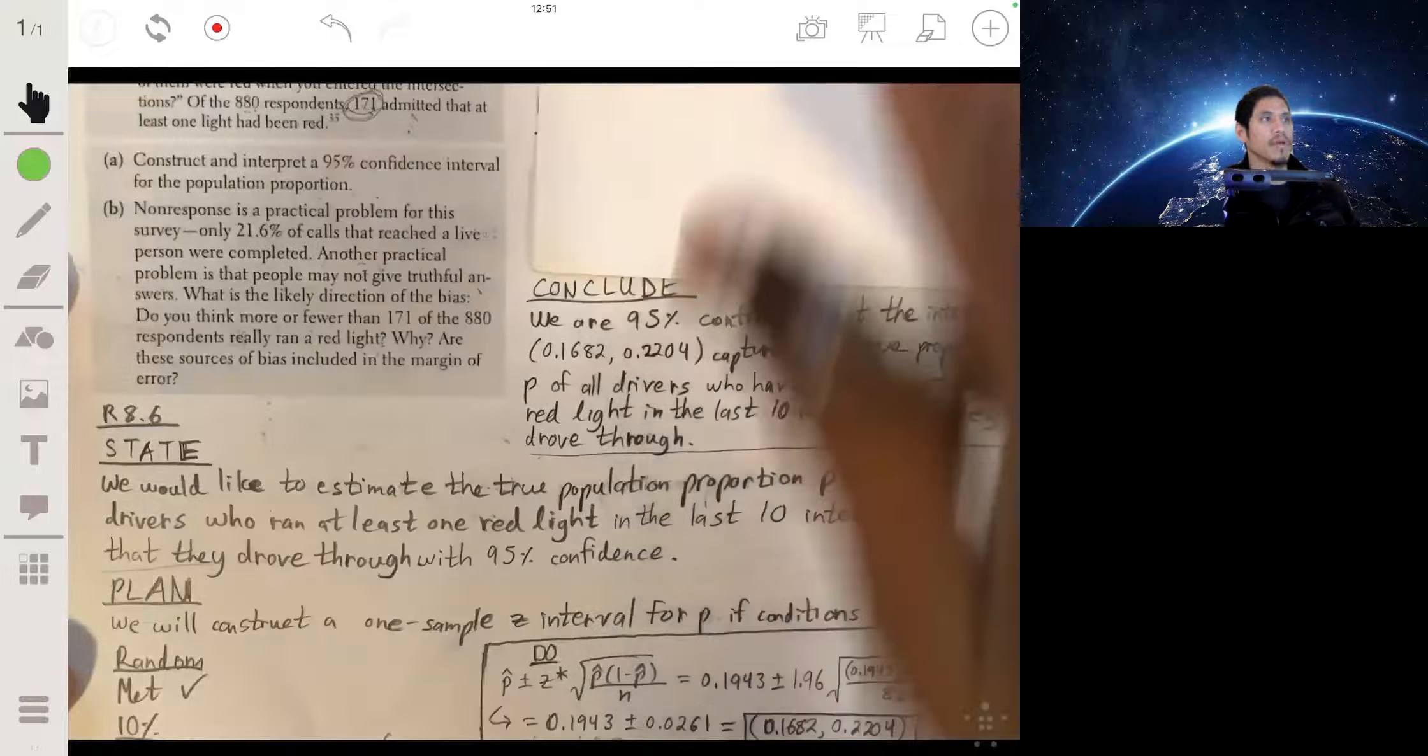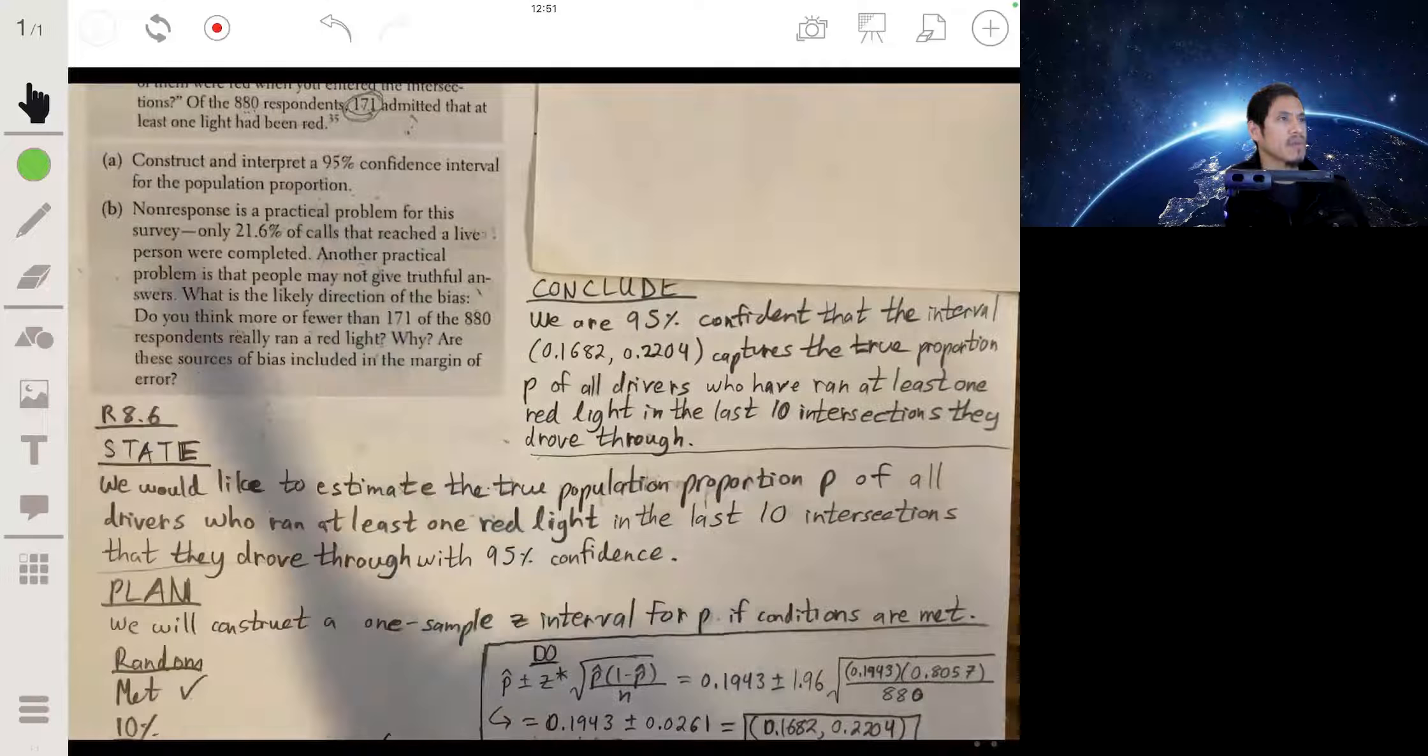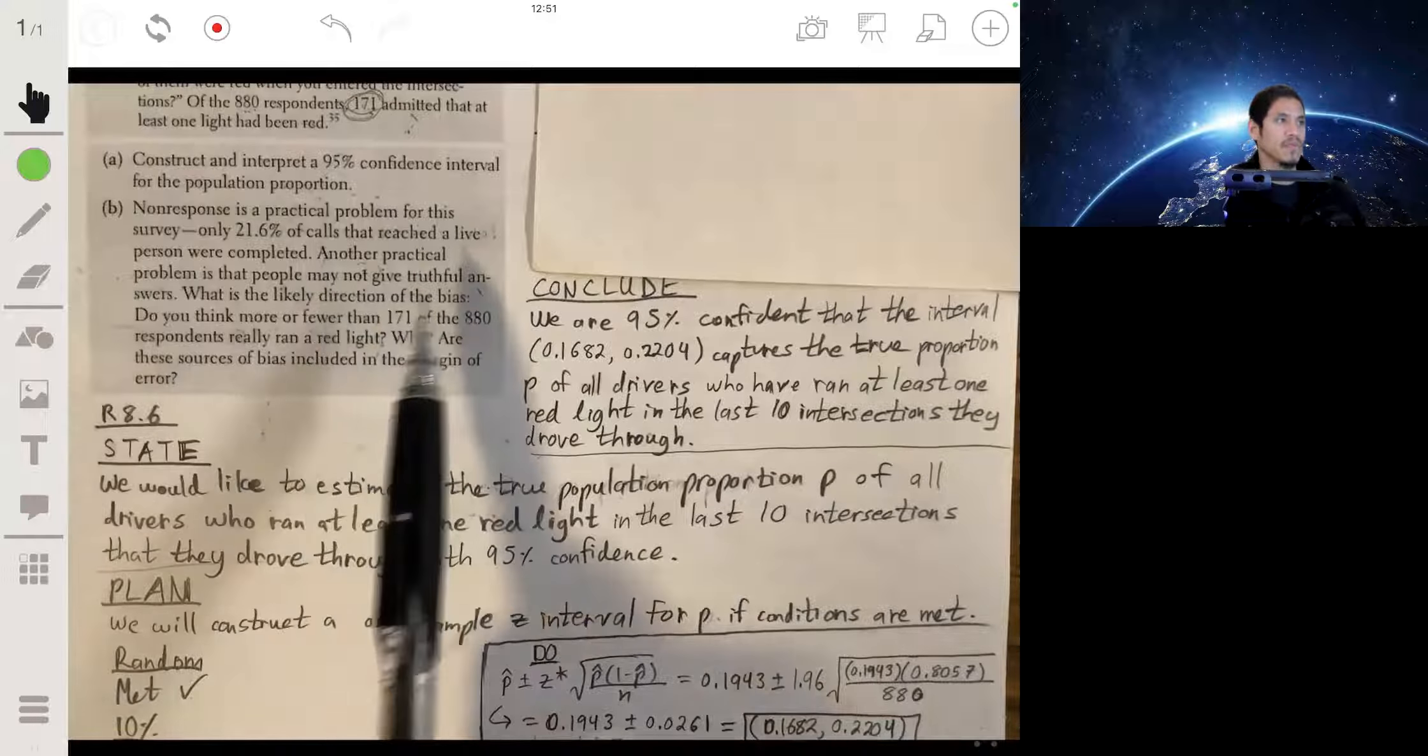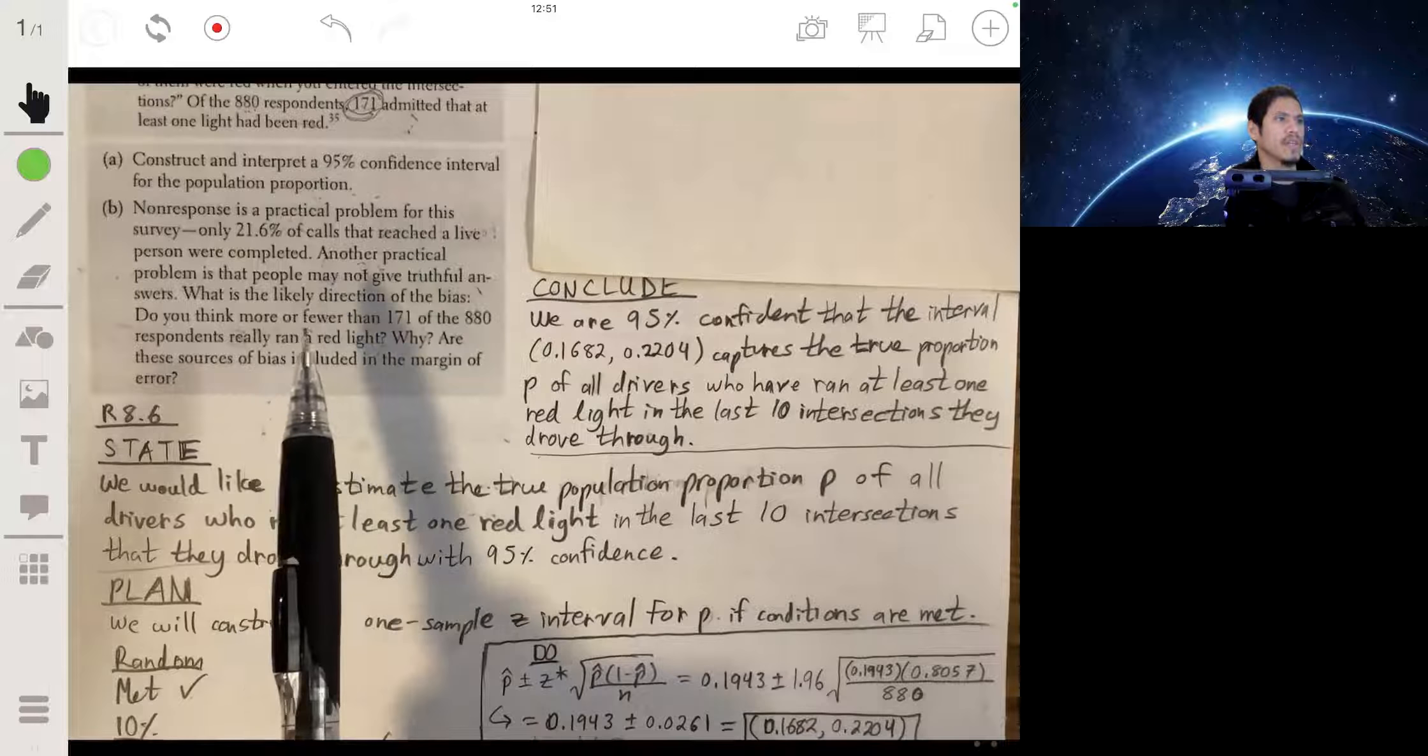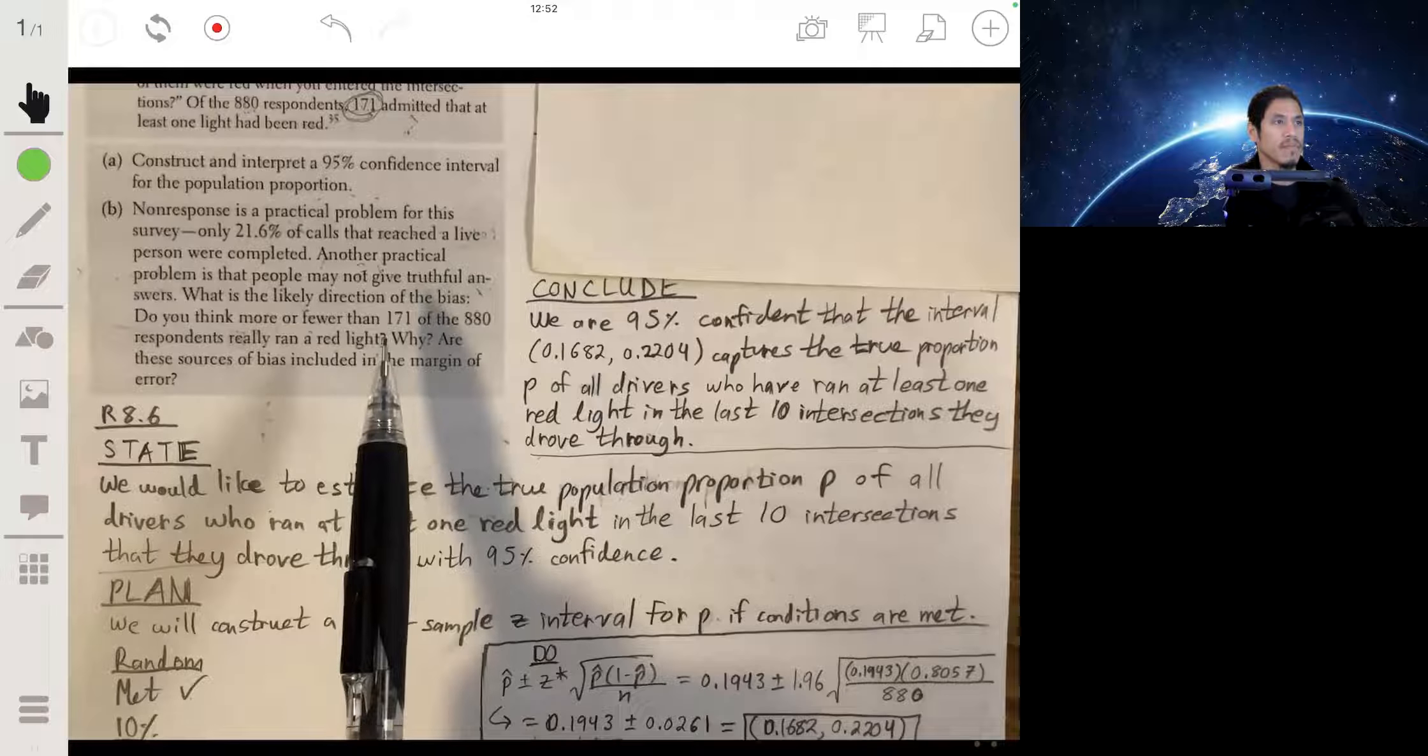Now let's follow up on part B. So non-response is a practical problem for this survey. Only 21.6 percent of calls that reached a live person are completed. Another practical problem is that people may not give truthful answers. So what is the likely direction of the bias? In other words, do you think that more or fewer than 171 out of these 880 people really ran a red light, and why?